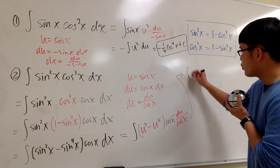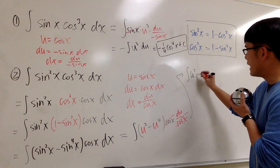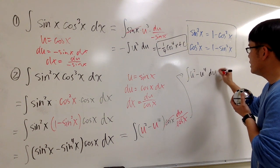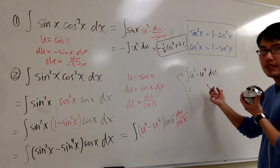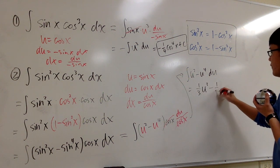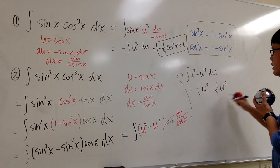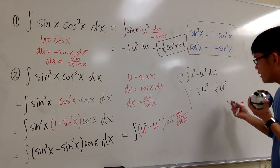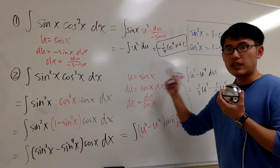This is nothing but just the integral of u squared minus u to the fourth power du. And of course, we can work this out pretty easily now. This is going to be 1 third u to the third power minus 1 fifth u to the fifth power. And then we are done. Right? And u is what? Sine x. That's all.